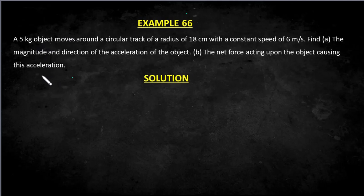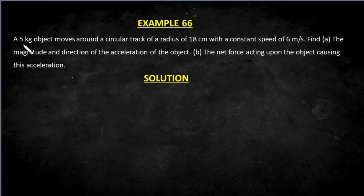Hello, welcome back. In this video I'm going to solve some problems on circular motion. We start by looking at example 66. We have a question: if a five kilogram object moves around a circular track of radius eight centimeters with a speed of this, find the magnitude and direction of the acceleration of the object, and the net force acting upon the object causing this acceleration.